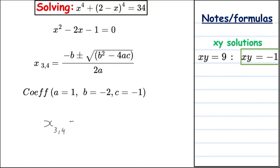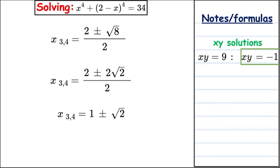Substituting into the formula for our third and fourth solutions, we get x equals (2 ± √(4 + 4)) / 2, giving √8 = 2√2 inside. Dividing through by the common factor of 2, our real solutions are x₃ = 1 + √2 and x₄ = 1 − √2.